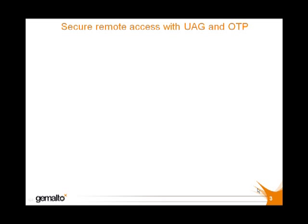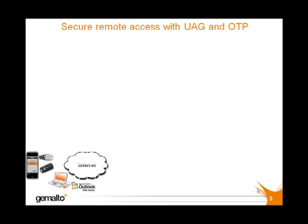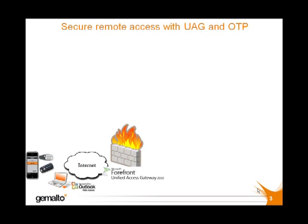So let's turn now to our demonstration scenario. In our scenario, we have a corporate user with a PC and a strong authentication token or tokens. Our user connects through to the corporate network via an SSL VPN application and firewall, which is Microsoft's UAG.